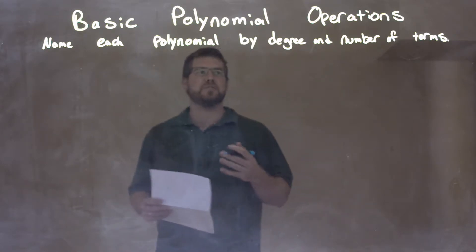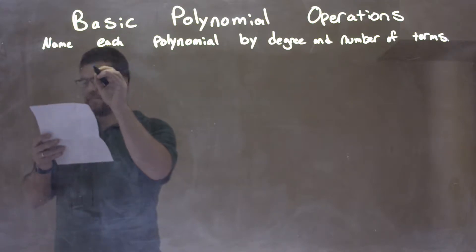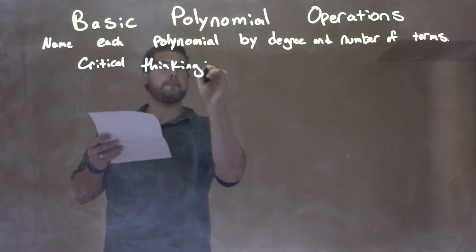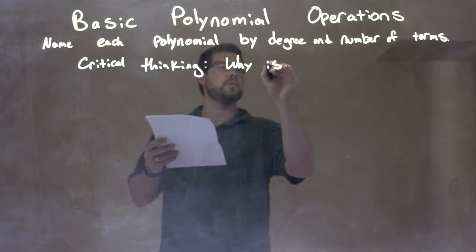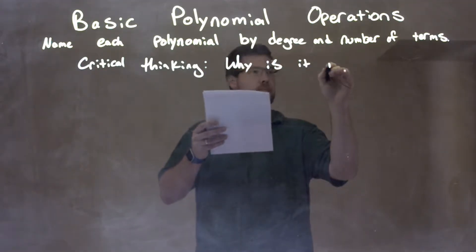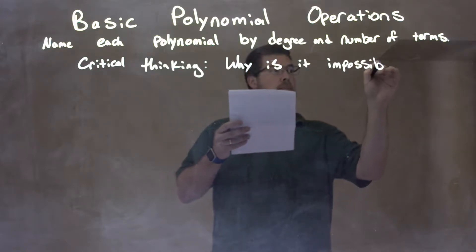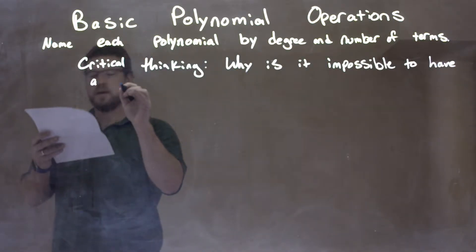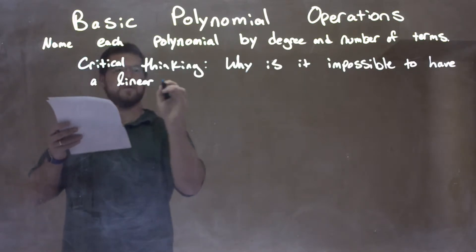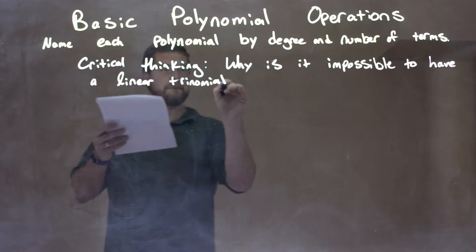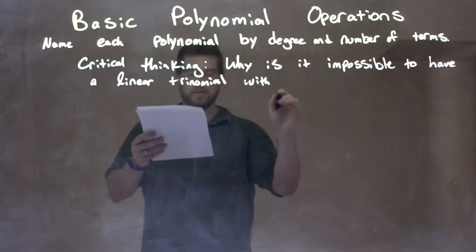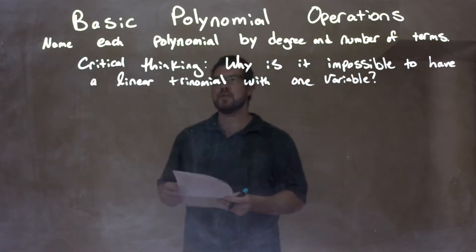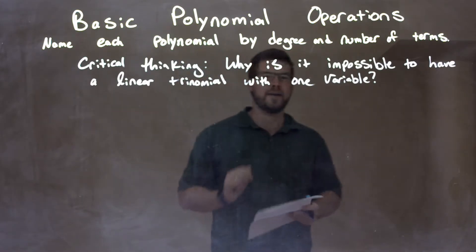And this is our critical thinking question. I'm not really naming too much here, but our critical thinking question. So critical thinking: Why is it impossible to have a linear trinomial with one variable?